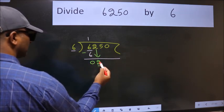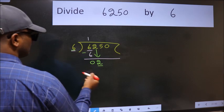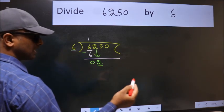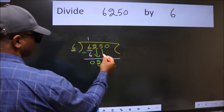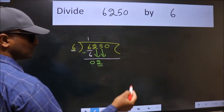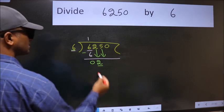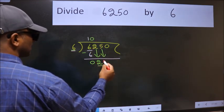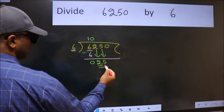Now, here we have 2 and here 6. 2 is smaller than 6. So, we should bring down the second number. And the rule to bring down the second number is put 0 here. Then only we can bring this number down. So, 25.